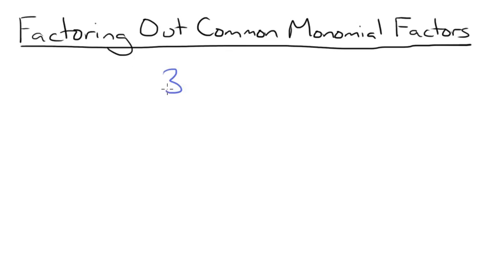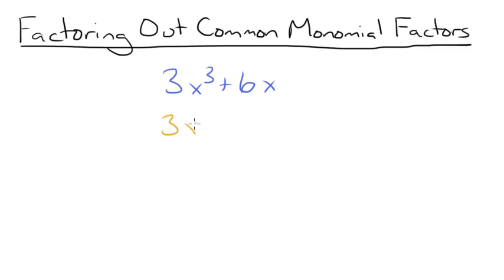Factor the binomial 3x cubed plus 6x. Start by finding a common factor between the two terms, 3x cubed and 6x. These both have a common factor of 3x, which is the monomial we are factoring out. We are going to undistribute and pull a 3x out of both of these terms, and then we'll write whatever's left over in parentheses.